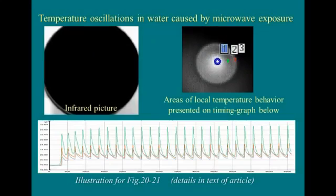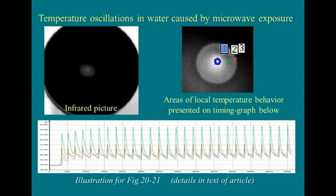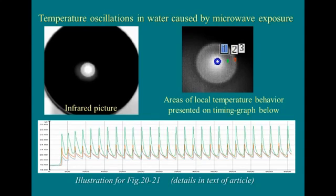In the next picture, temperature oscillations in a 34 mm Petri dish are shown, exposed to 52 GHz millimeter waves from the bottom. Output power is 40 mW, and the irradiation area is 13 mm².